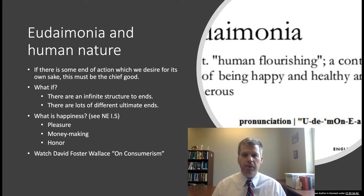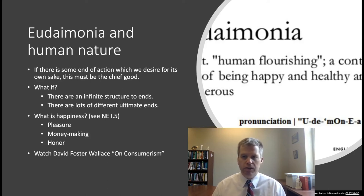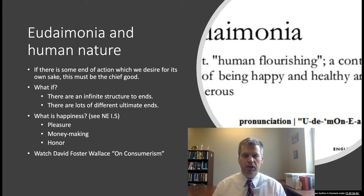Aristotle identifies the ultimate end as happiness, seeing competing goods like health, knowledge, and pleasure as parts of what the good life is. In Nicomachean Ethics Book 1, Chapter 5, he discusses the then-common conceptions of happiness: pleasure, money-making, and honor. He dismisses these fairly quickly: pleasure isn't distinctive of the human logos because lower animals share in it; money-making is merely instrumental; and honor depends too much on people honoring you rather than on your being honorable.